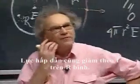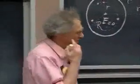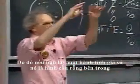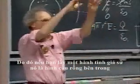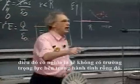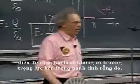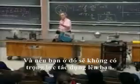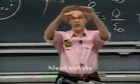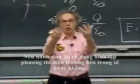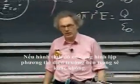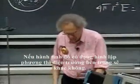Gravitational forces also fall off as one over r squared. Therefore, if you take a planet — if it existed — which is a hollow spherical planet, hollow inside, there would be no gravitational field inside that hollow planet. So if you were there, there would be no gravitational force on you — if it is spherical. If that planet were a cubical planet, then the gravitational field inside would not be zero.